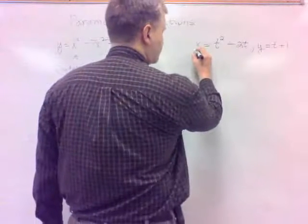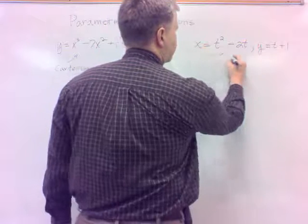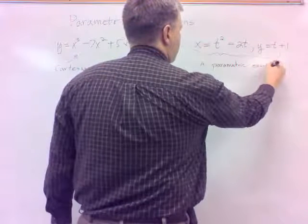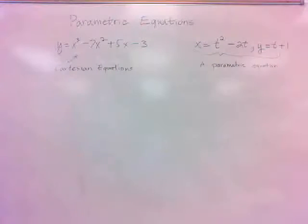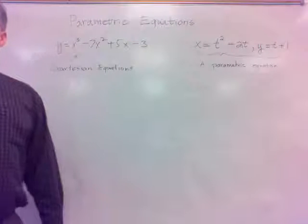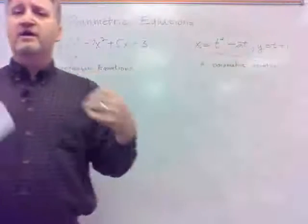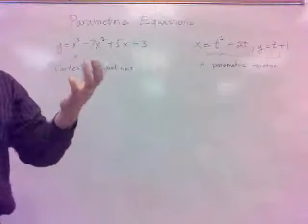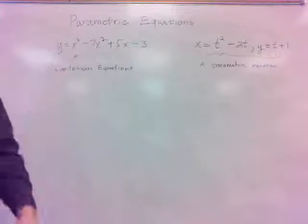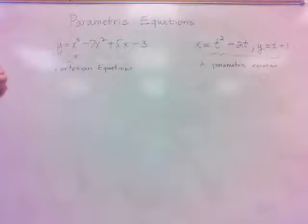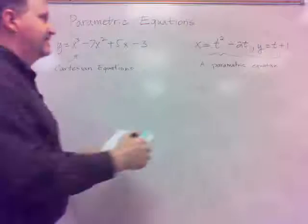This right here is what's known as a parametric equation. Let's notice a couple of differences. The x and y here are defined in terms of a third variable, t. This t is the same as that t. I've got a third variable here, and that's called the parameter. The t is called the parameter.